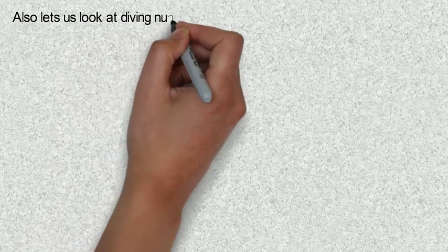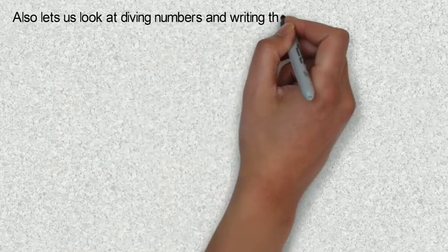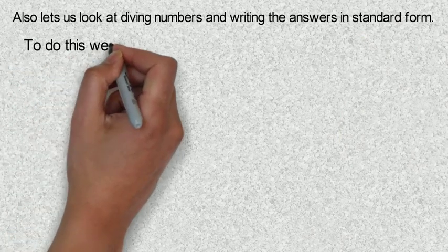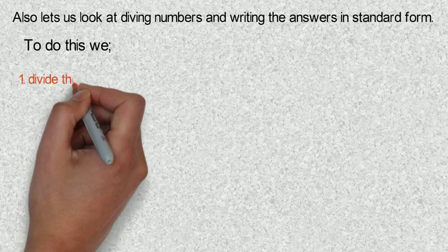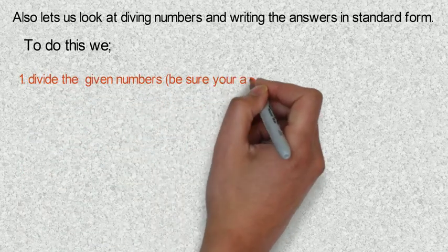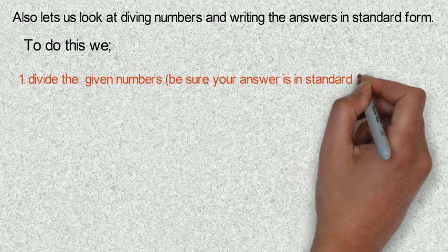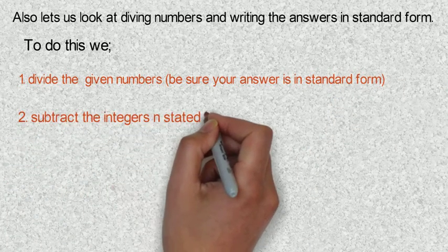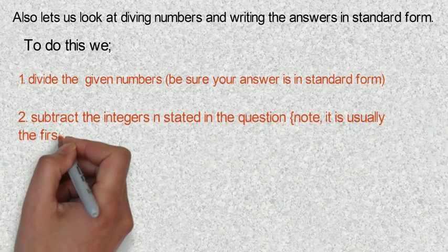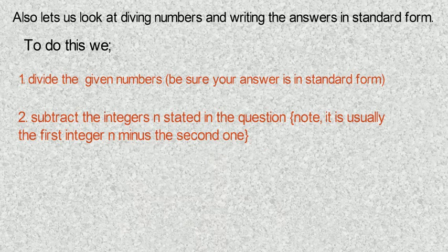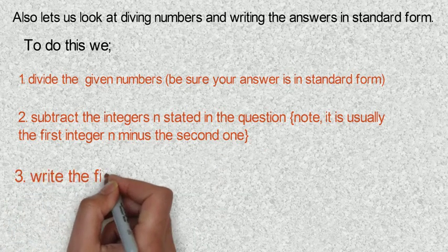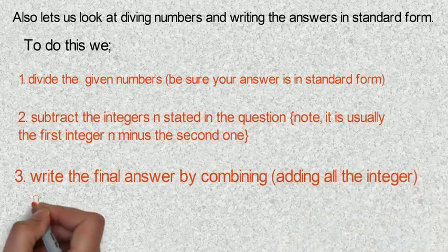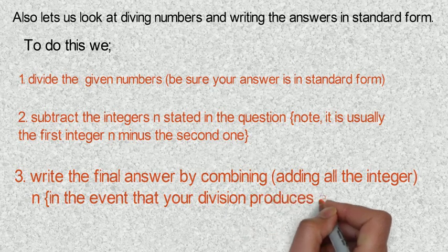We will also look at dividing numbers and writing the answers in standard form. To do this: first, divide the given numbers and ensure the answer is in standard form. Second, subtract the integers n stated in the question — it is usually the first integer minus the second one. Then third, write the final answer by combining all integers in the event that your division produces a new one.